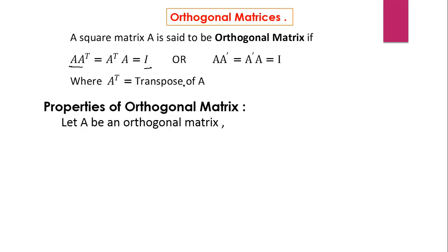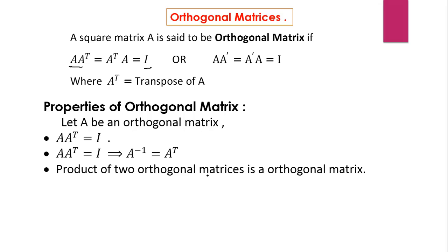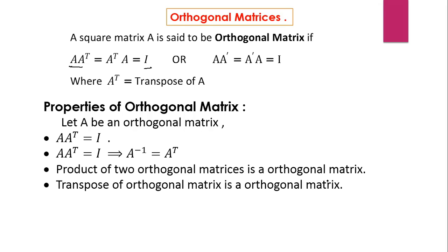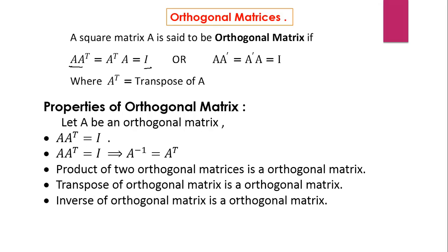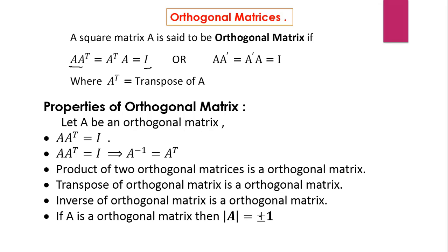Some important properties of orthogonal matrices: If A is an orthogonal matrix, then A into A transpose equals the identity matrix. Multiplying both sides by A inverse, we get A inverse equals A transpose. Also, the product of two orthogonal matrices is orthogonal, the transpose of an orthogonal matrix is orthogonal, the inverse of an orthogonal matrix is orthogonal, and if A is orthogonal then the determinant of A is plus or minus 1. If plus, we call it proper orthogonal; if minus, we call it improper orthogonal.